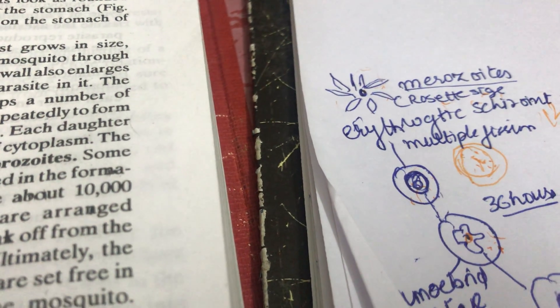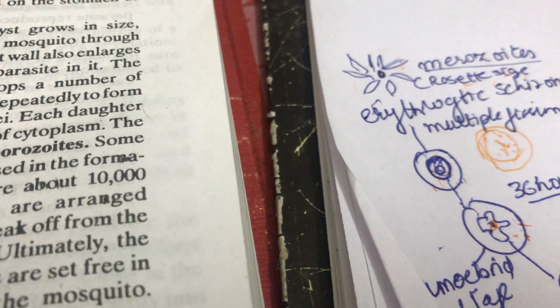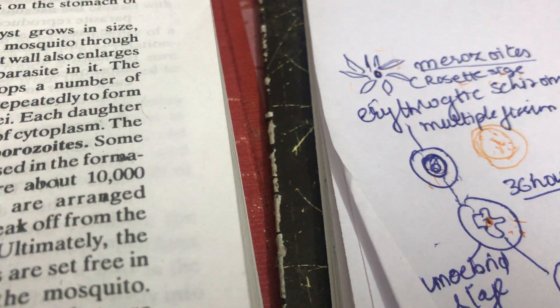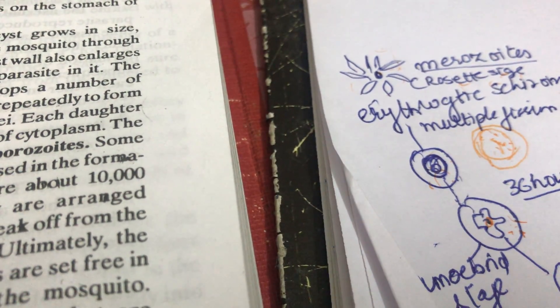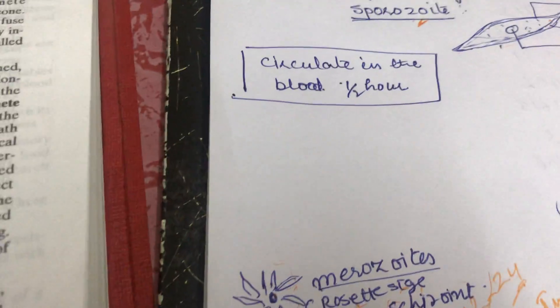Erythrocytic schizogony repeats about 5 times before the parasite becomes numerous enough and produces enough toxins to cause malarial fever.